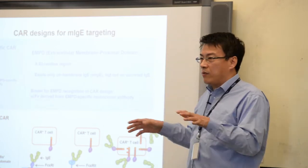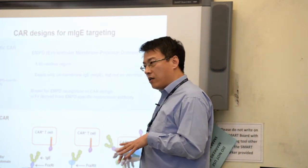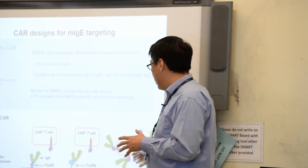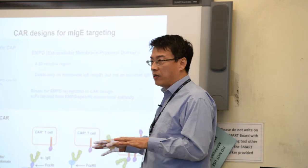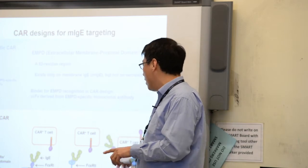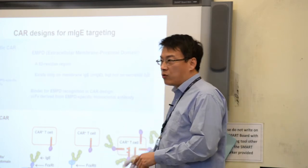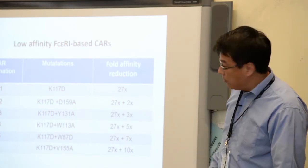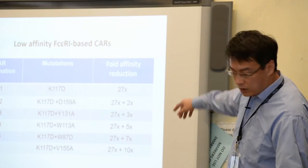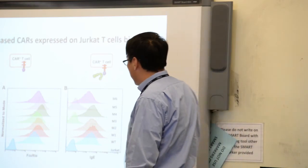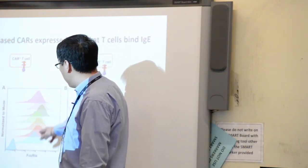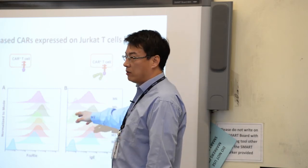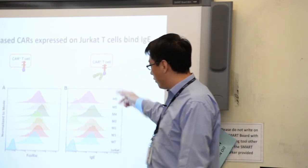We made six mutations using point mutations or combination point mutations to reduce their affinity to different degrees. We made the CAR and expressed it on the Jurkat T cell, which is a human T cell line. As you can see, they're expressed pretty nicely. But when we look at their binding to IgE, we found that M3 and M5 actually don't bind very well. Their affinity properties are too low, so we dropped those and continued investigating the rest of the mutants.